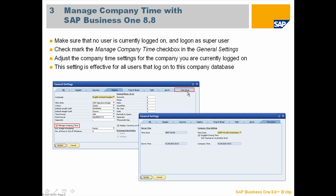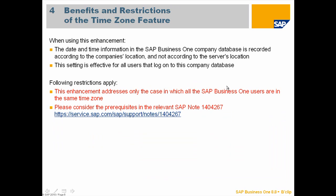If you click on the Time Zone tab folder, a new view appears. On the left side, you can see the server time and server time zone. On the right side, you can adjust the time zone for the company you're currently logged on to, and you can also choose whether this company is in daylight saving time or not. As a result, you can see the company time, which is valid for all users who will log on to this company database. Clients will record new transactions based on this company time setting and not on the pure server time setting.